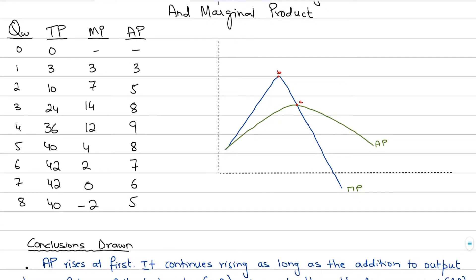Diminishing marginal returns sets in at the fourth worker. When we hire the fourth worker, the marginal product starts to fall from 14 to 12, which means that because of hiring the fourth worker, only 12 more units are being added or contributed to the total product. We've already seen this in the previous videos, so now we're more focused on the average product.